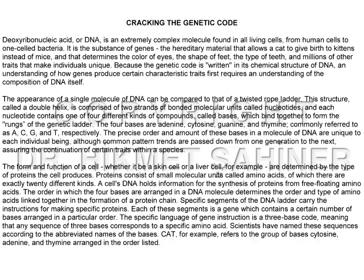It is the substance of genes, the hereditary material that allows a cat to give birth to kittens instead of mice, and that determines the color of eyes, the shape of feet, the type of teeth, and millions of other traits that make individuals unique. Because the genetic code is written in its chemical structure of DNA, an understanding of how genes produce certain characteristic traits first requires an understanding of the composition of DNA itself.